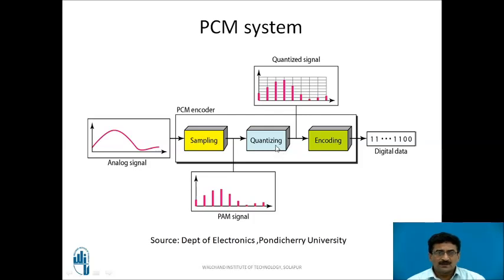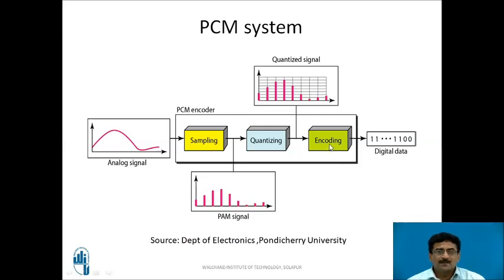The output of the quantizer is given to an encoder. The function of the encoder is to decide the number of bits for each sample value based on the number of quantization levels. If there are four quantization levels, the encoding bits required is log₂(4) = 2 bits. If there are eight quantization levels, log₂(8) = 3 bits represent every sample.